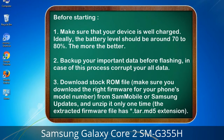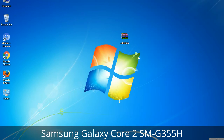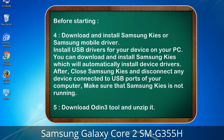Before starting: 1. Make sure that your device is well charged. Ideally, the battery level should be around 70 to 80% — the more the better. 2. Back up your important data before flashing, in case this process corrupts your data. 3. Download the stock ROM file. Make sure you download the right firmware for your phone's model number from Sammobile or Samsung Updates, and unzip it only one time. The extracted firmware file has a .tar.md5 extension.